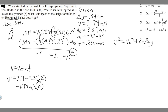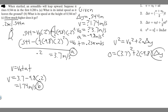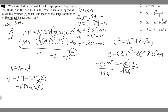Plugging in: 0 squared equals 3.7 squared plus 2 times minus 9.8 times delta y. Moving 3.7 squared to the other side: minus 3.7 squared equals 2 times minus 9.8 times delta y, which is minus 19.6 times delta y. Dividing both sides by minus 19.6 — the negatives cancel — gives delta y equals 3.7 squared divided by 19.6. Computing that, delta y equals approximately 0.698, which I'll round to 0.7 meters.